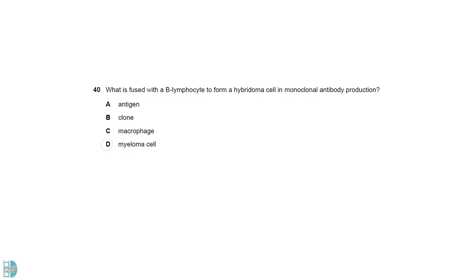A B lymphocyte is fused with a myeloma cell. It is a cancerous cell that can divide infinitely. This enables the hybridoma cells to undergo mitosis when grown in culture.